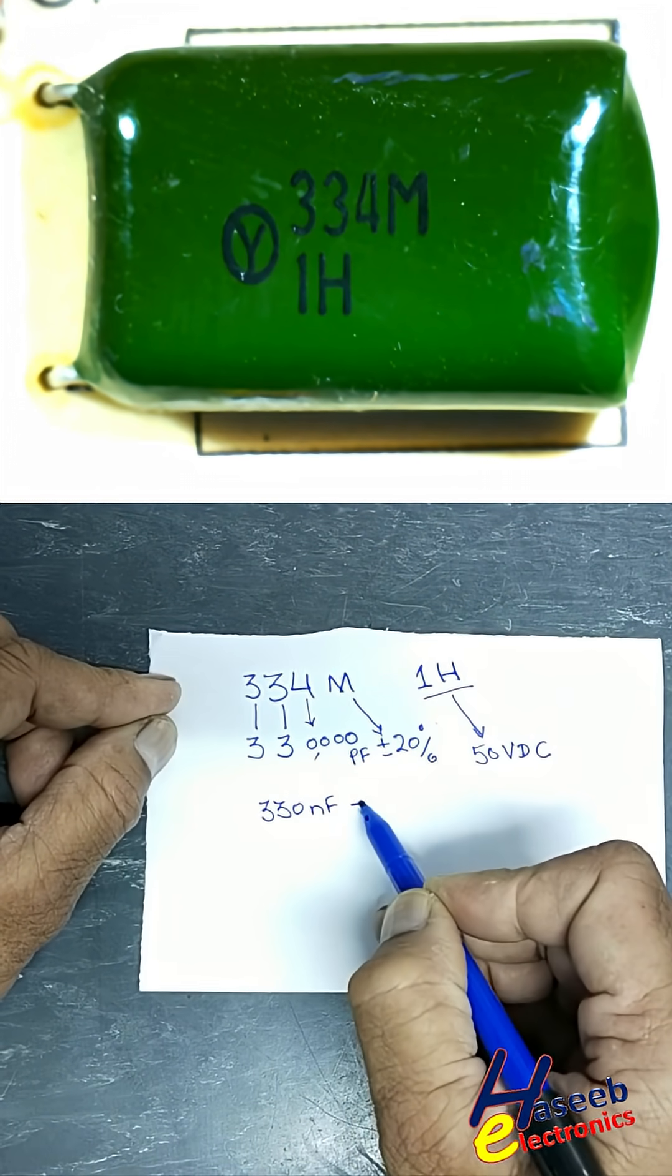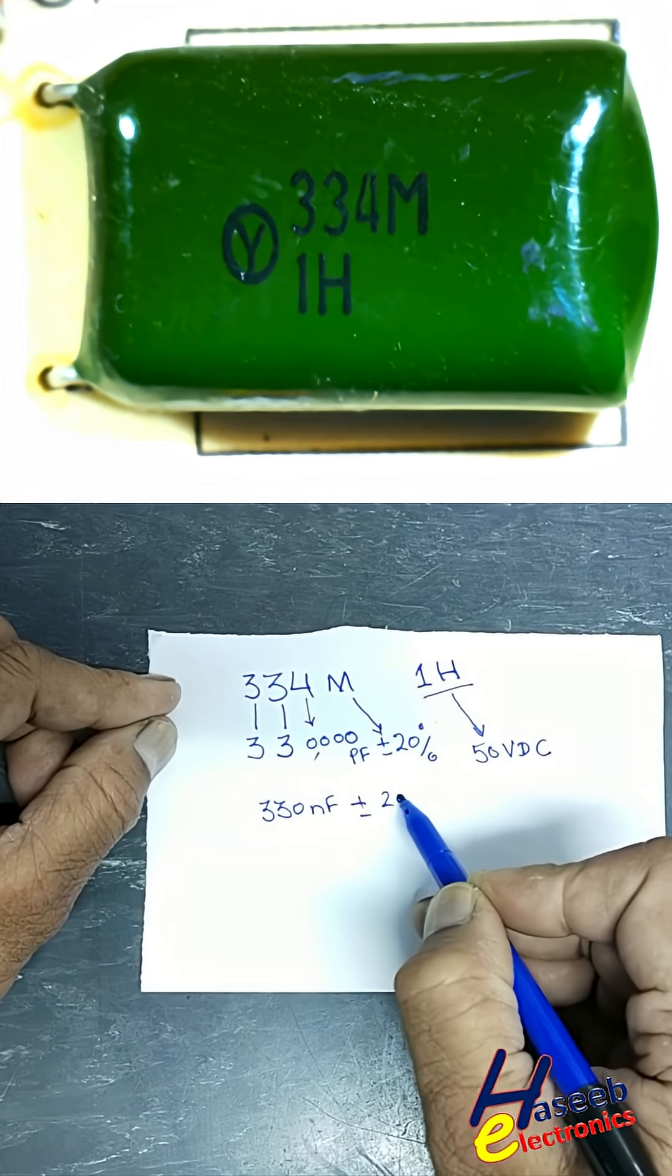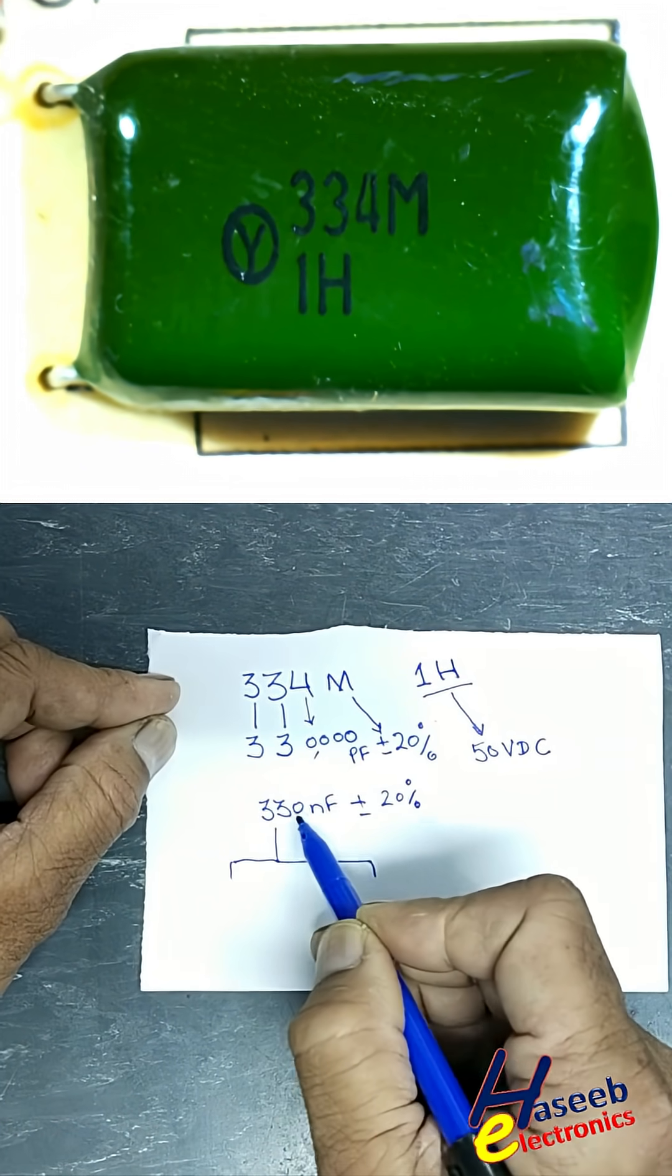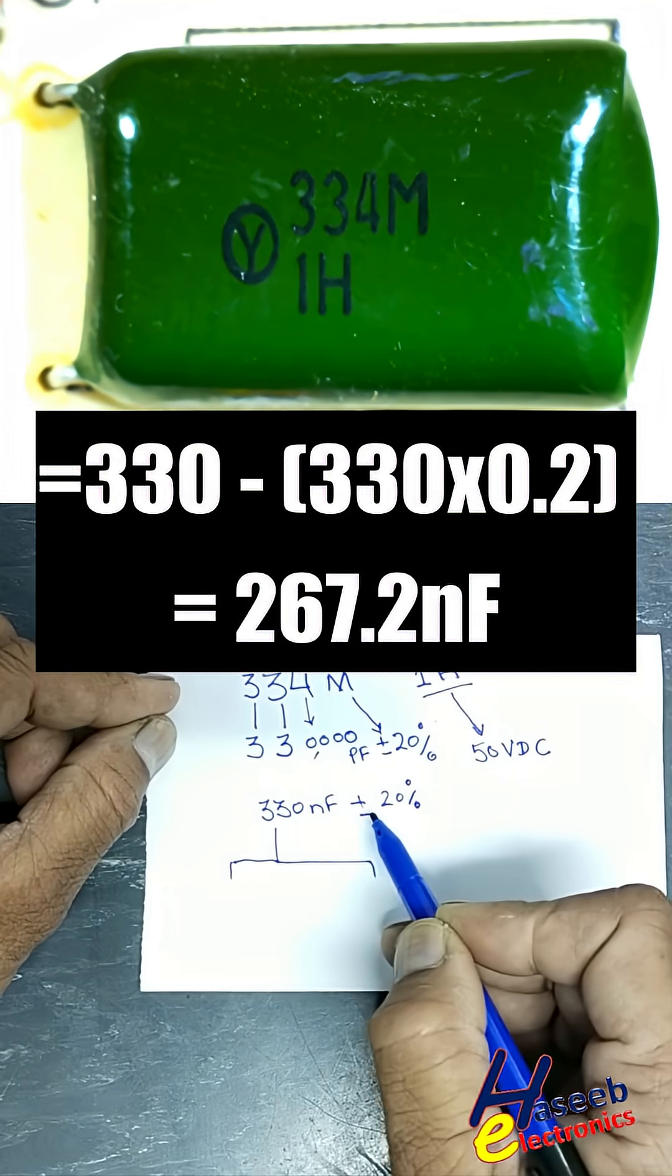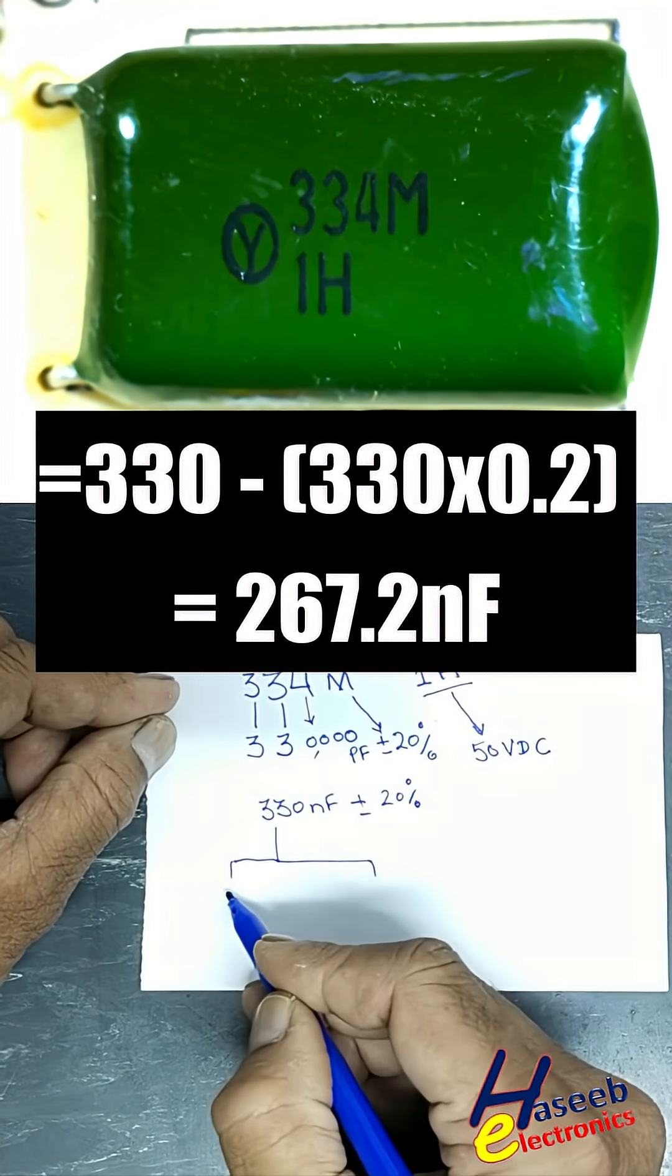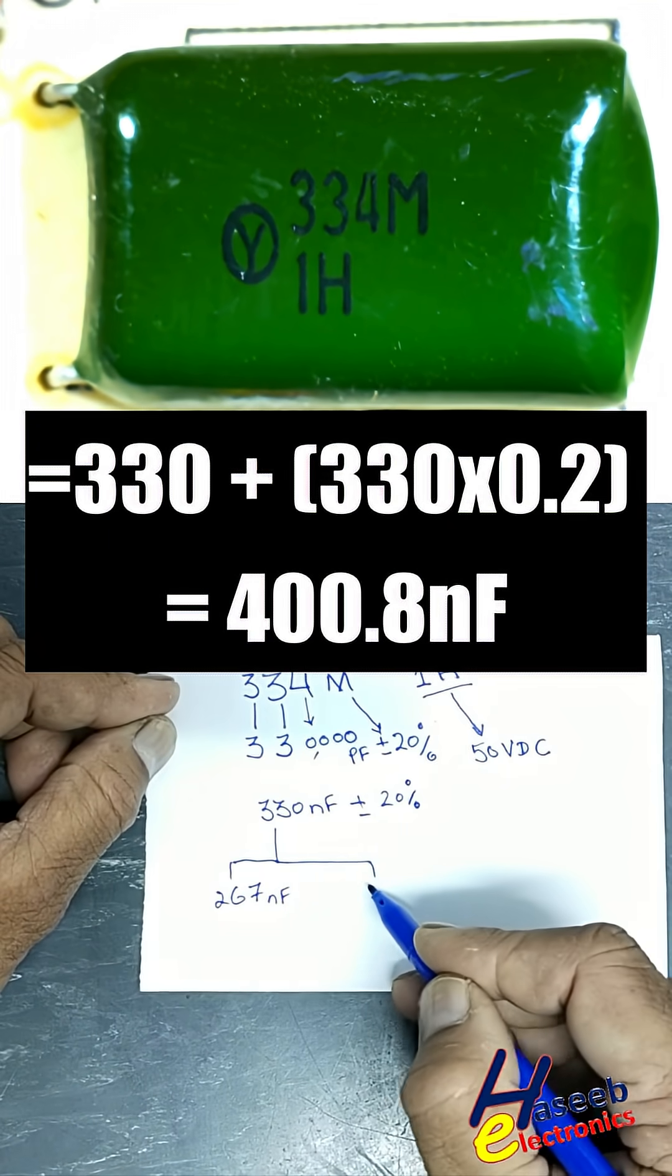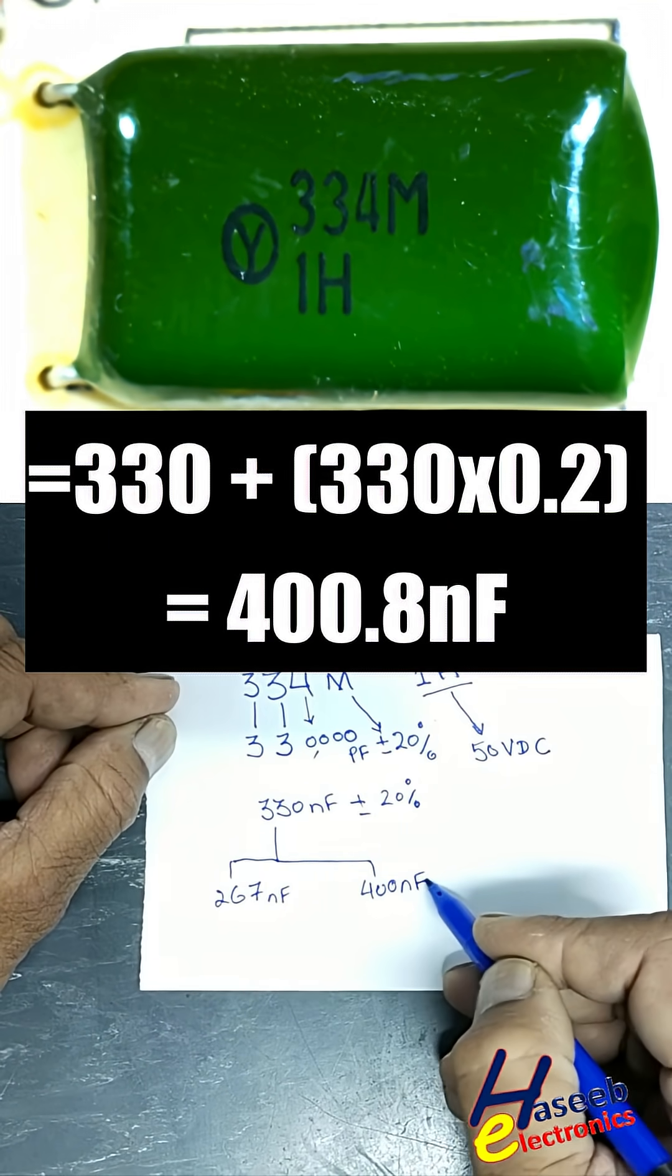This gives us a capacitor value of 330 nanofarad plus minus 20%. On the minus side, 330 minus 20% equals 267 nanofarad, and on the plus side, 330 plus 20% equals 400 nanofarad.